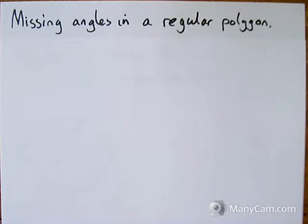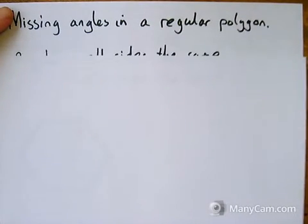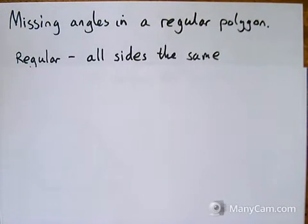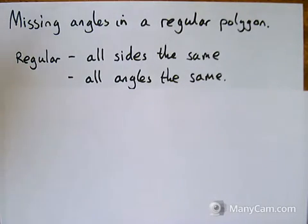First of all, I'm going to show you a definition of what a regular polygon is. If a polygon is regular, it means that all sides are the same length and all angles in that polygon are the same.